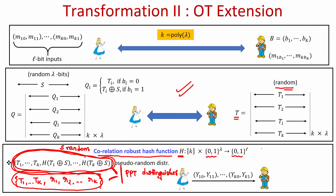How do we build such a correlation robust hash function? It turns out that if we assume the random oracle model — where the hash function behaves like a uniformly random function and interaction is modeled through oracle queries — then any hash function in that model gives us the correlation robust property. For practical instantiations, you can take secure hash functions such as the SHA family.